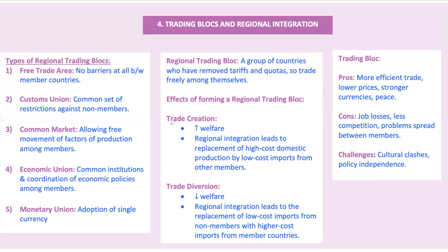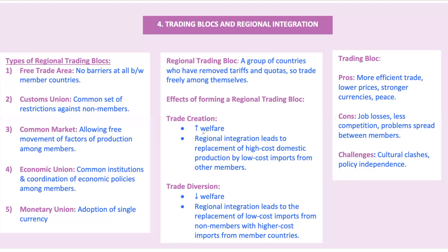Trade creation occurs when integration replaces costly domestic production with cheaper imports from member countries — it boosts welfare. Imagine country A and B in a trading block where B produces goods more cheaply than C, a non-member. After removing tariffs, A imports more from B, increasing consumer surplus and overall welfare. For example, when Spain joined the European Union, it started importing cheaper agricultural products from other Eurozone countries, benefiting Spanish consumers. Trade diversion happens when integration swaps low-cost imports from non-members with higher-cost ones from member countries, which can reduce overall welfare even if consumer surplus increases.